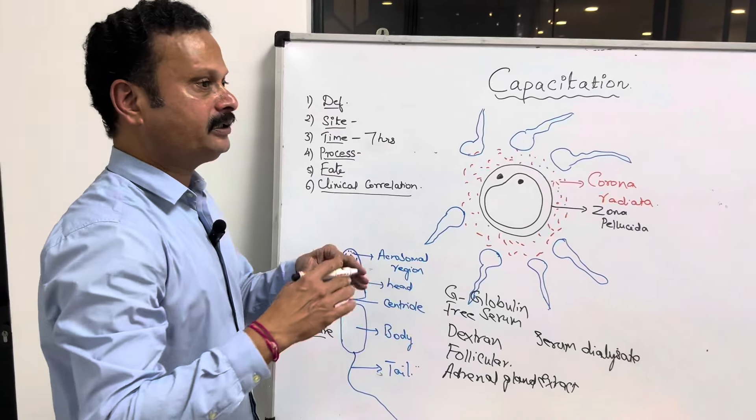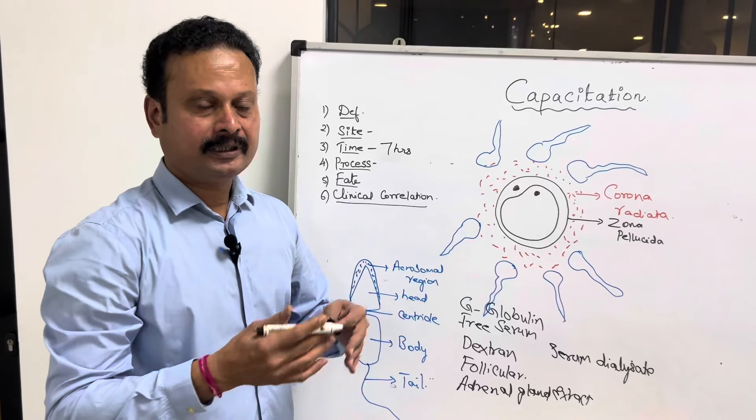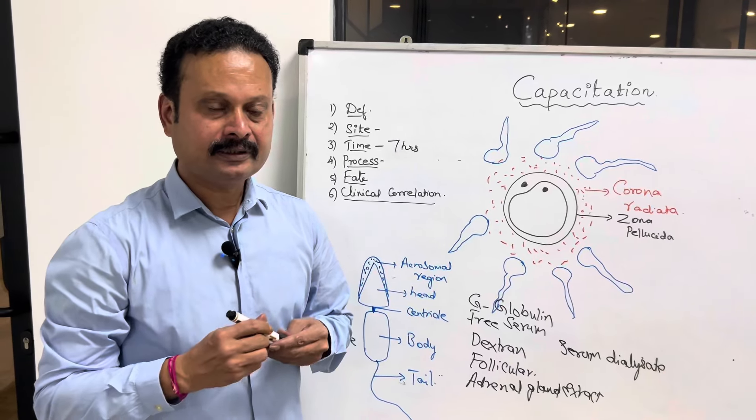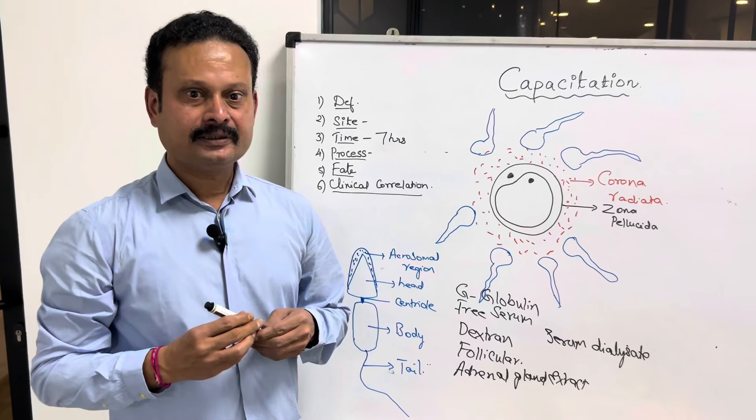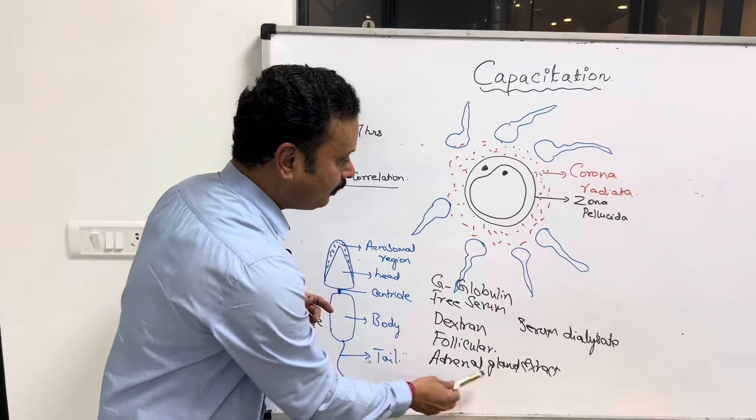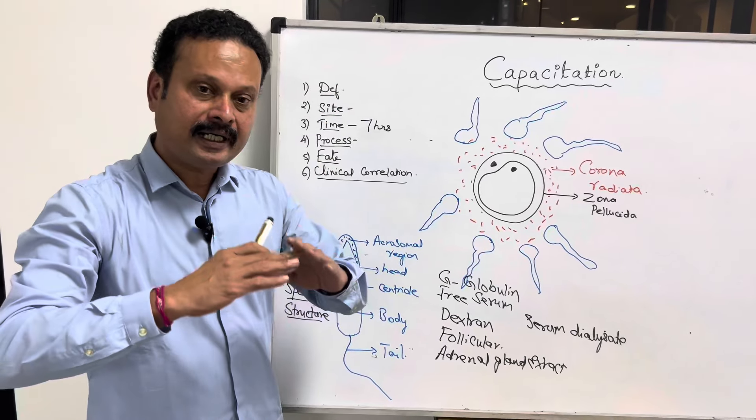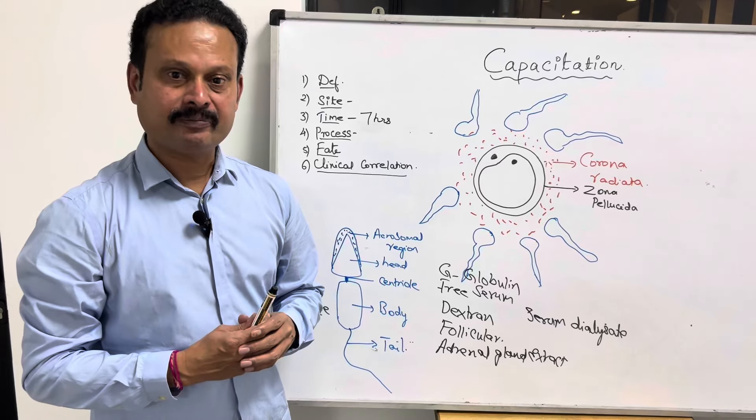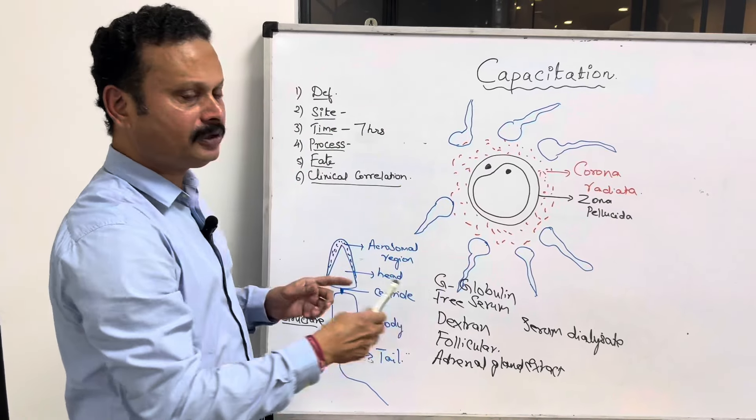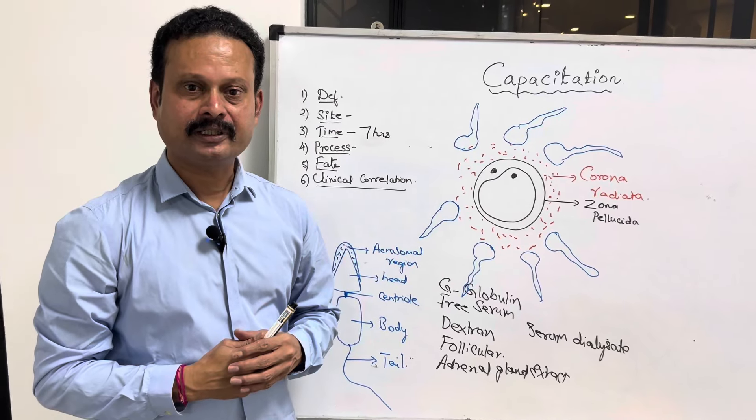So the ejaculated sperms in in vitro fertilization are treated with a solution containing all these things, and that favors the process of capacitation. This is all about the small topic called capacitation. Thank you.